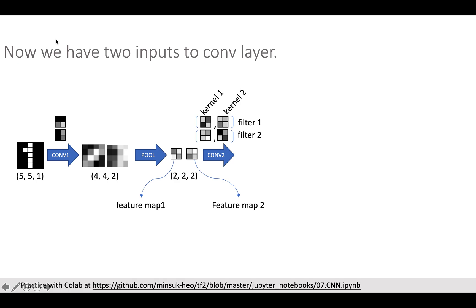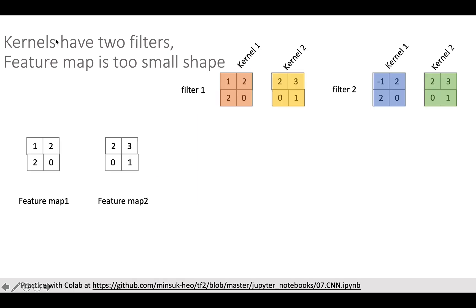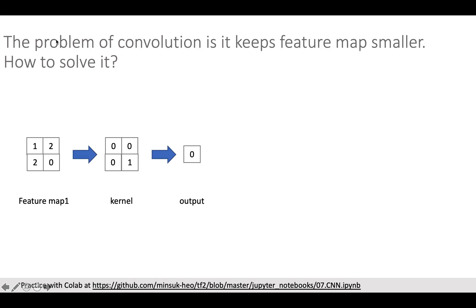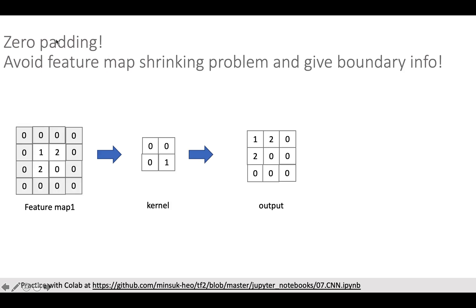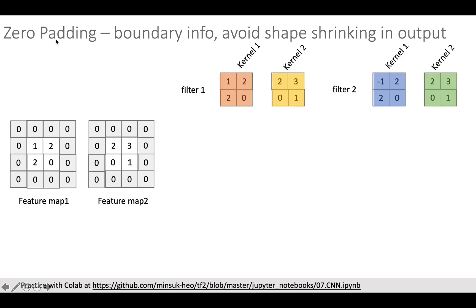Now we have two feature maps, so the next convolutional layer must have two kernels in one filter. Let's suppose we want to detect two features, therefore we have two filters which have two kernels. Before we start convolution, I think the feature map size is too small to move our kernels. The problem of the convolution step is it makes feature map size smaller. Normally people use zero padding trick to avoid shrinking feature map size and also give boundary information to the model.